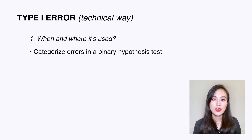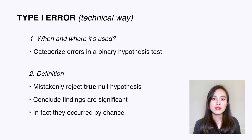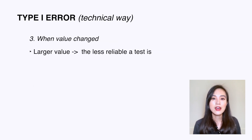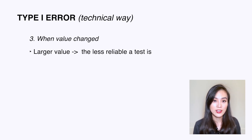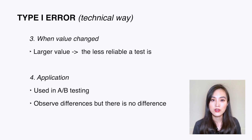Type 1 error, also known as false positive, is used to categorize errors in a binary hypothesis test. It occurs when we mistakenly reject a true null hypothesis — meaning we conclude our findings are significant when in fact they occurred by chance. The larger the value, the less reliable a test is, so we want to minimize type 1 error. It is commonly used in A/B testing to show that we observe differences between two groups when in reality there is no difference.